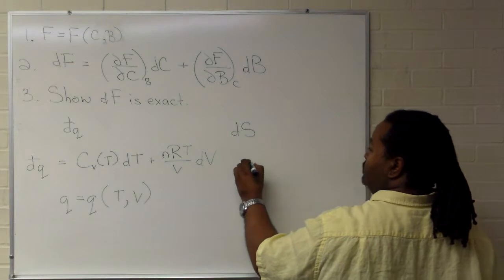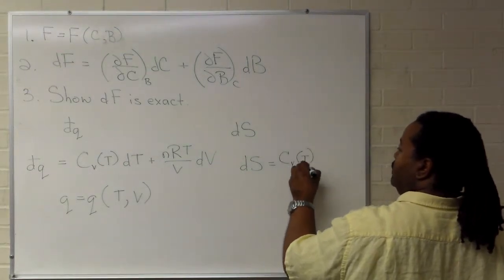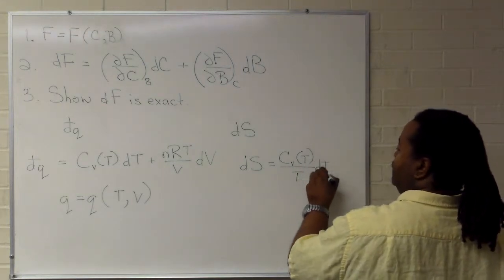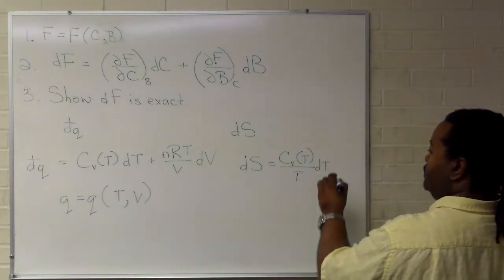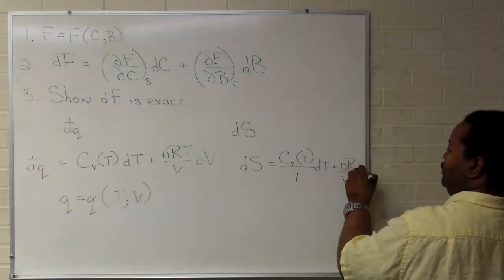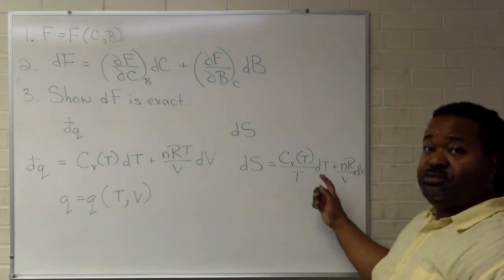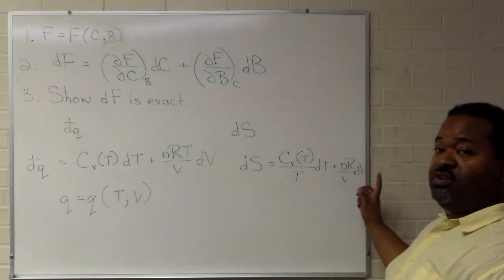For entropy, we get a function of temperature times d temperature and nR over v, dv. So we have functions of just temperature, dt, functions of just volume, dv.